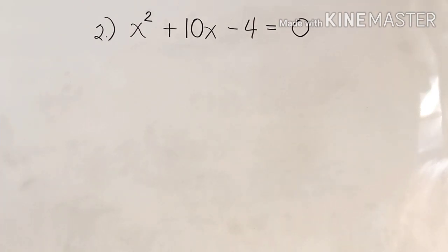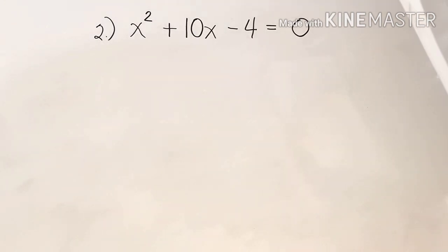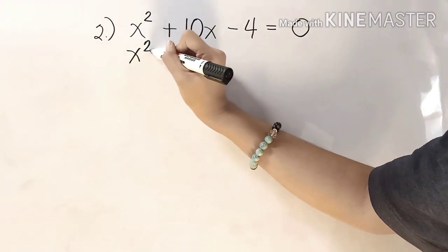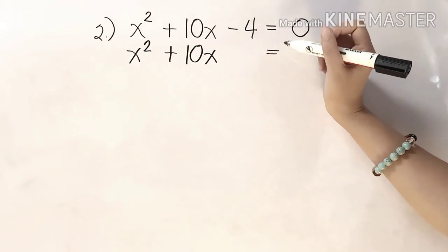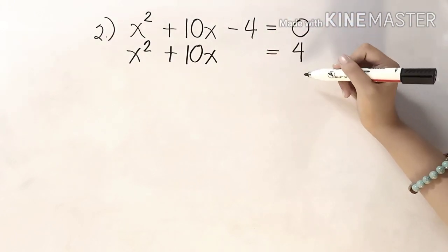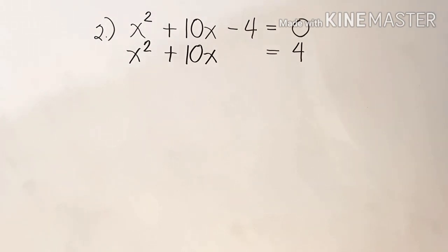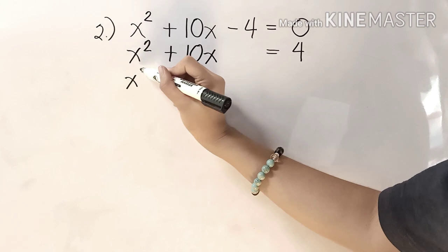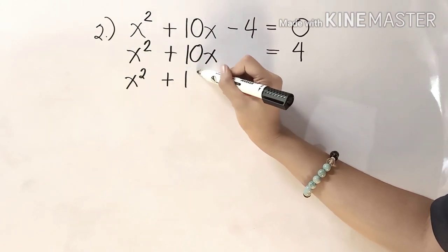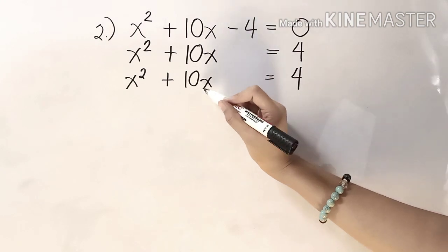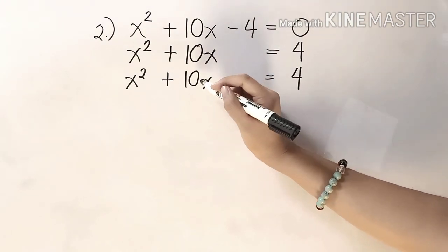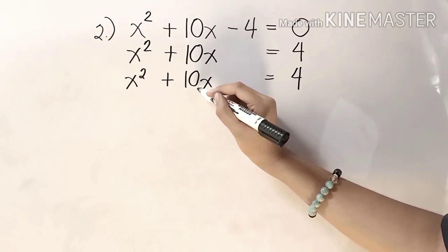We will now proceed to example 2: x squared plus 10x minus 4 equals 0. The first step is to rewrite the equation in the form x squared plus bx equals c. So this will be x squared plus 10x equals positive 4, since we transpose negative 4 to the other side making it positive. The same method applies: 10 divided by 2 is 5, and 5 squared equals 25.